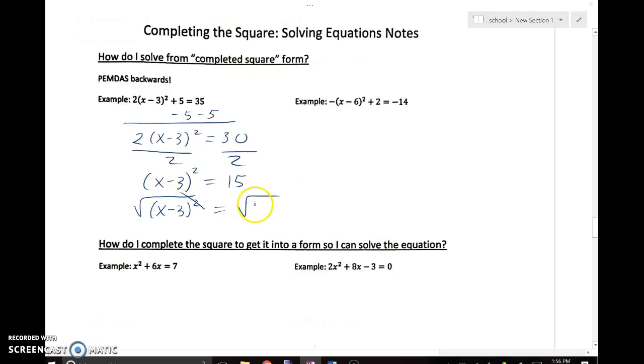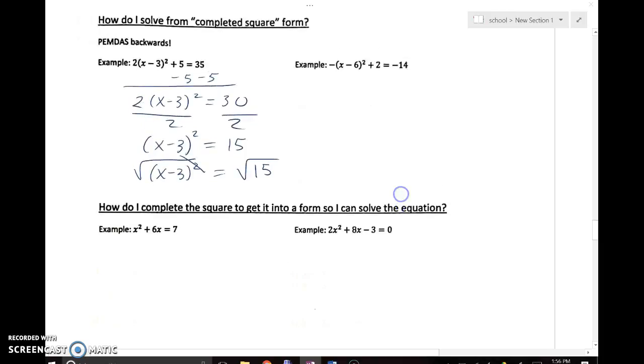If I take the square root of the left side, I've got to take the square root of the right side. You could pick up your calculator and find the square root, or you could write it in simplest radical form. Square root of 15 does not break down. If you typed it into your calculator, you would have gotten 3.87.